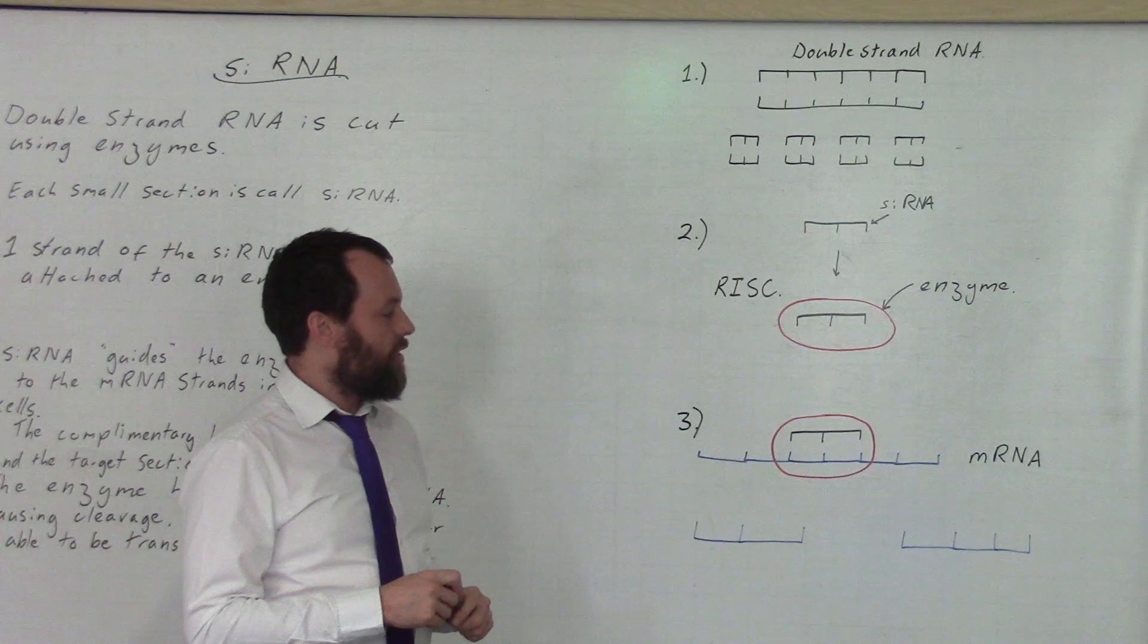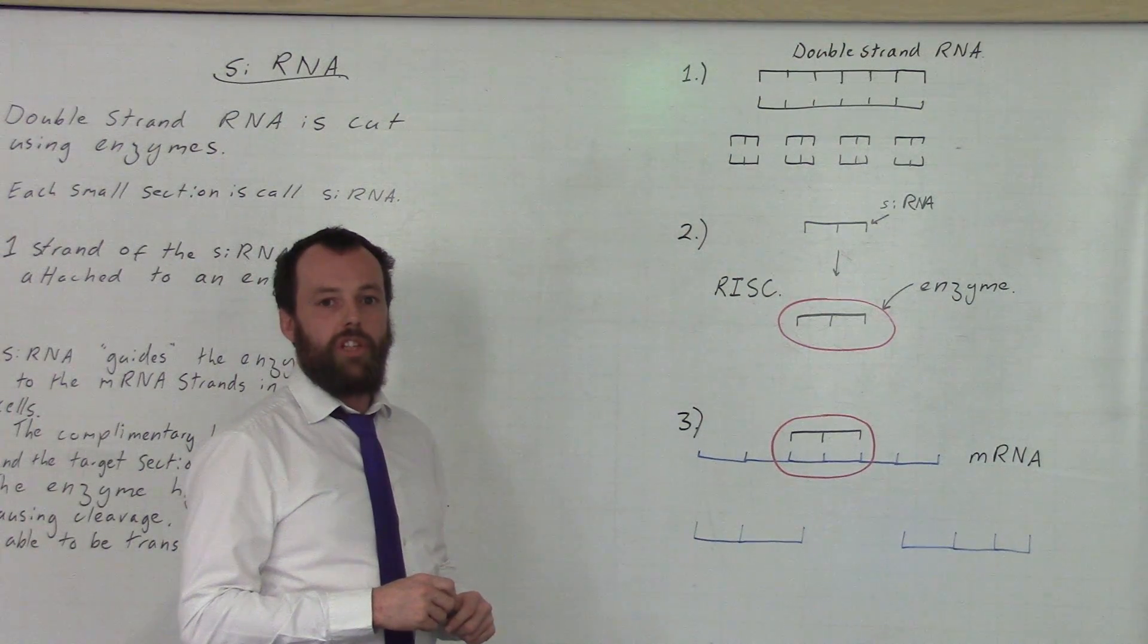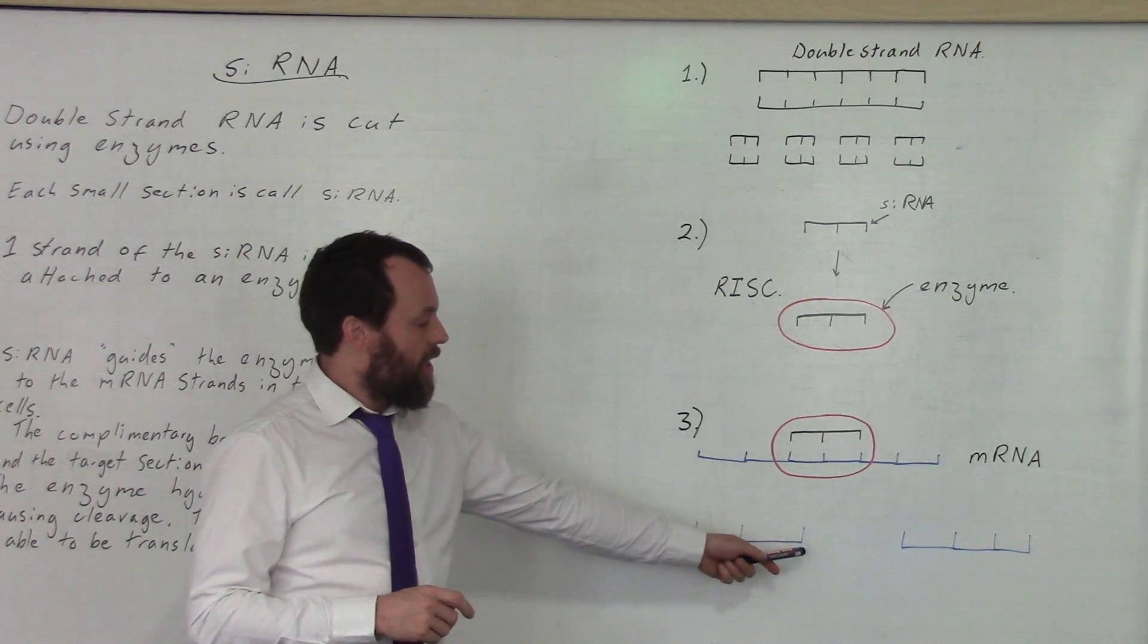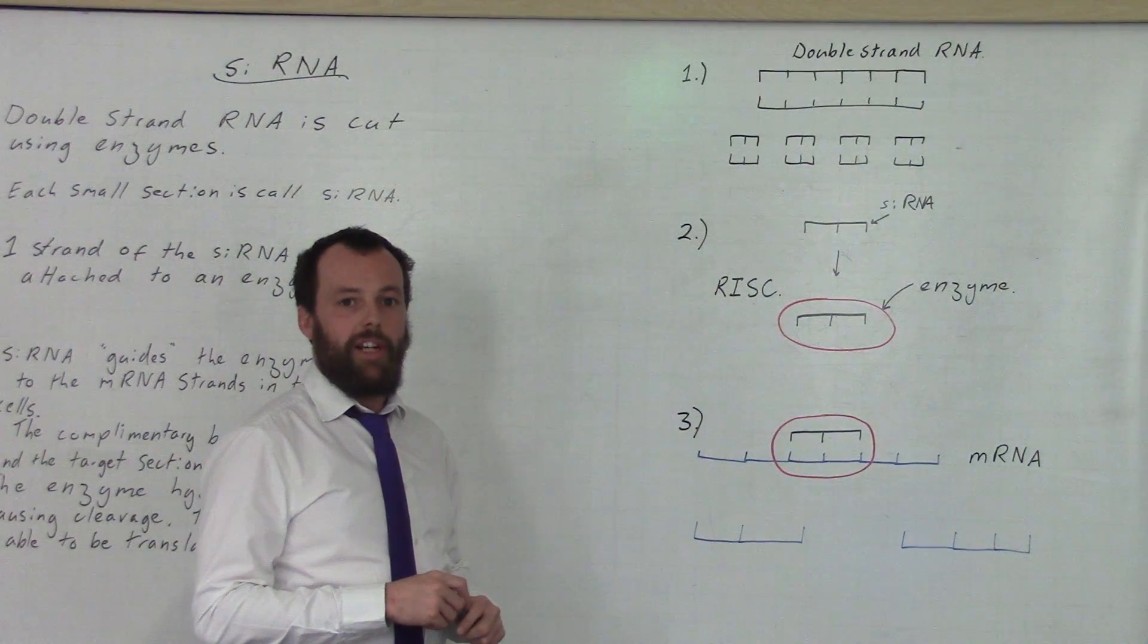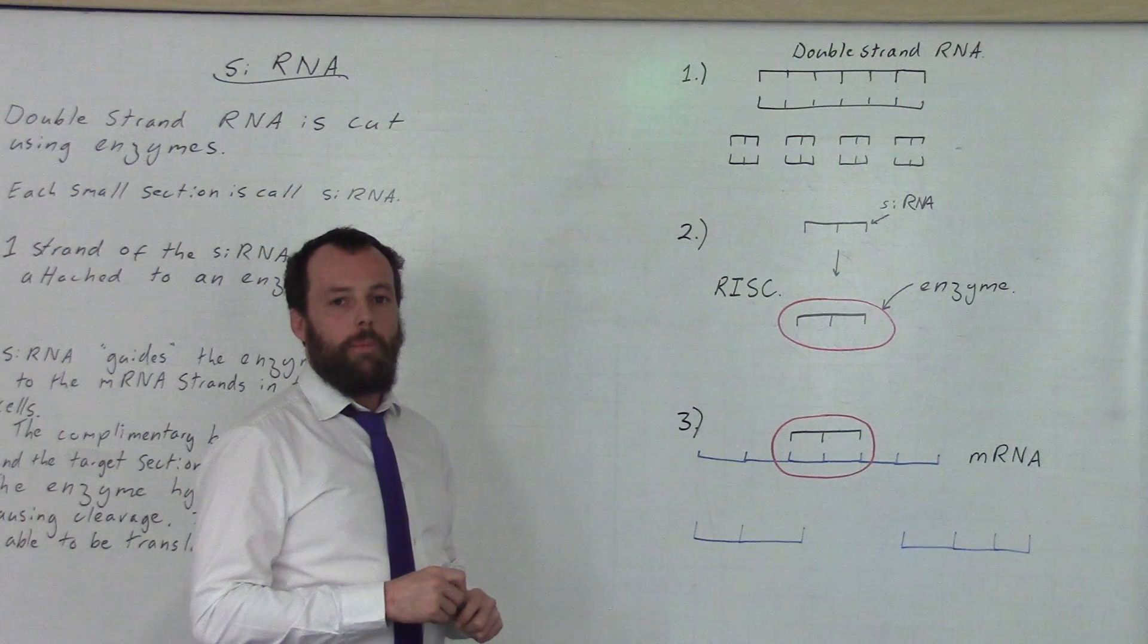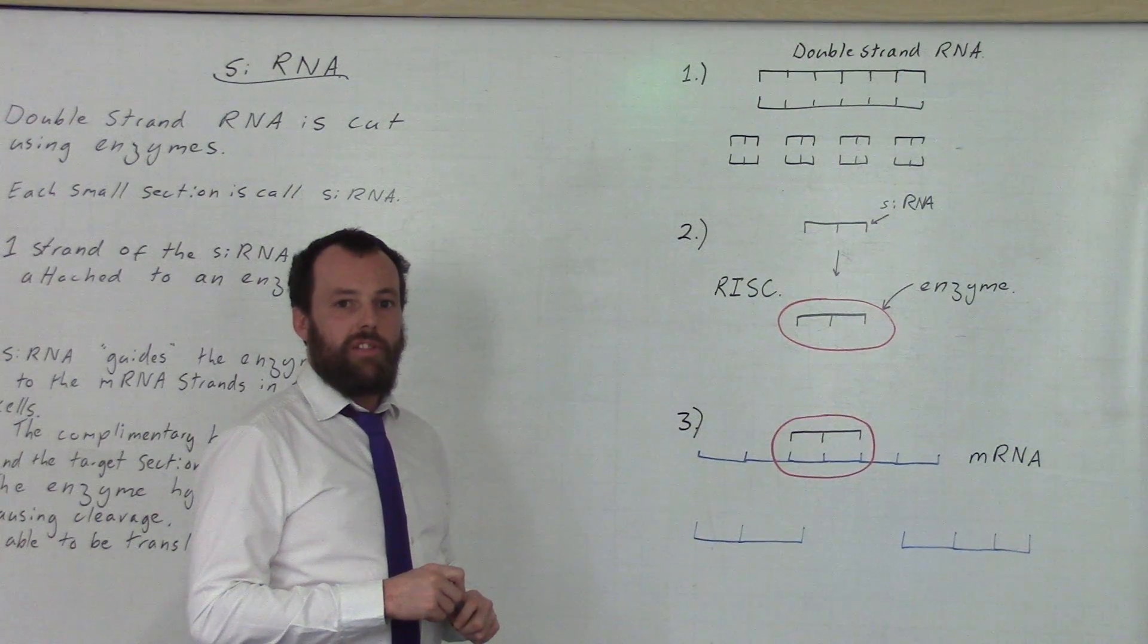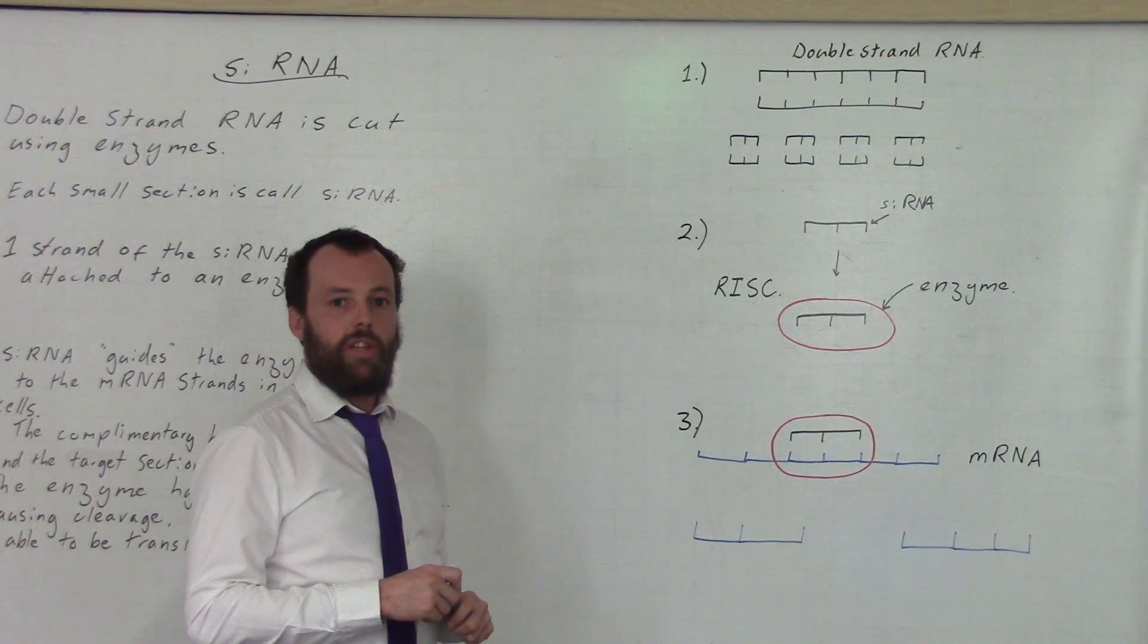The uses of this are that if you have a genetic disorder, you can stop that genetic disorder being expressed by breaking down this section of the mRNA. This then stops the mRNA, or at least stops this section of the mRNA, being used in translation to produce amino acids and proteins, which would be expressed in the genetic disorder.